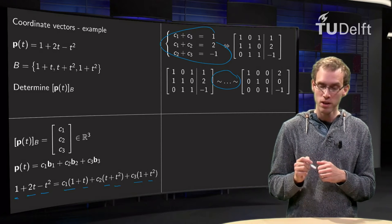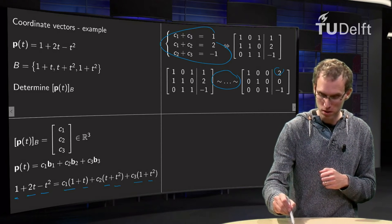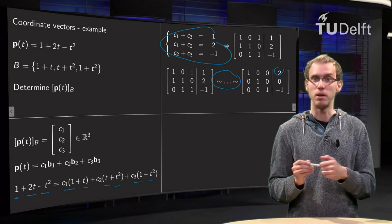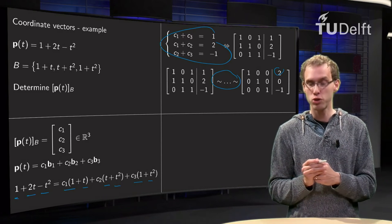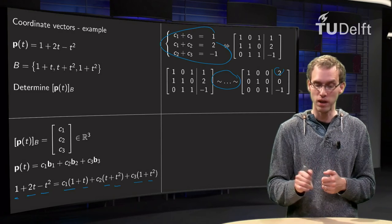And I skip straight to the reduced echelon form, and we can read off our solution. We see 1 times c1 plus 0 times c2 plus 0 times c3 equals 2. Same for the others, so c1 equals 2, c2 equals 0, c3 equals minus 1.